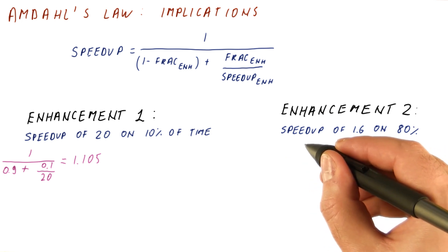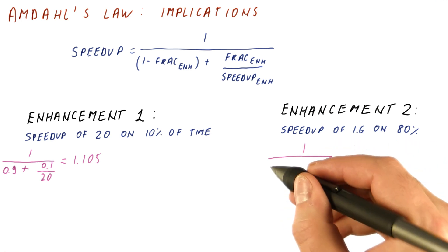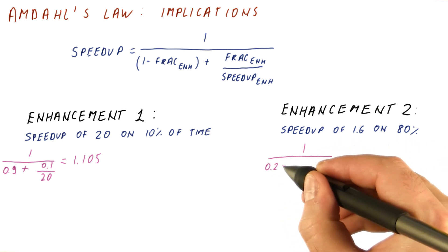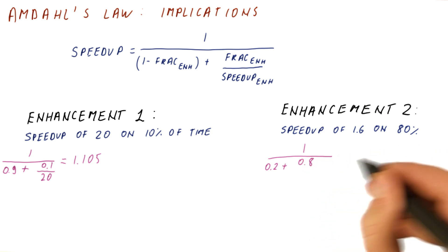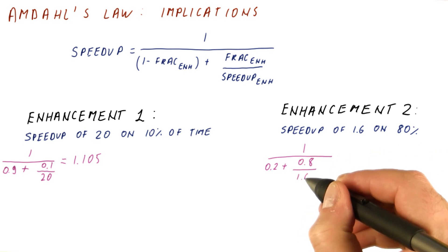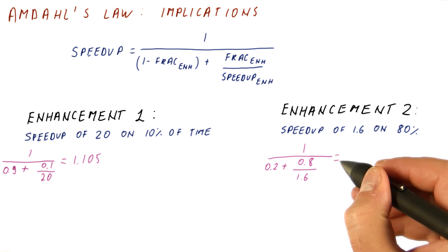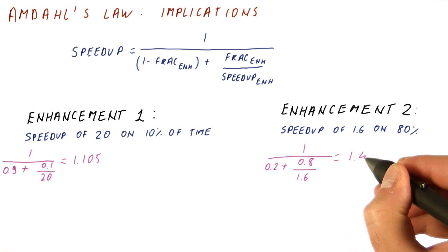Here we get 1 over, the unenhanced fraction is 0.2. The enhanced fraction is 0.8, and we speed that up by 1.6 factor. And we get 1.43.